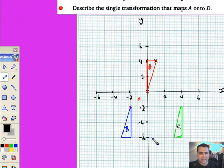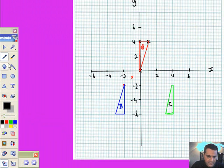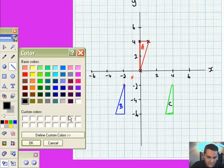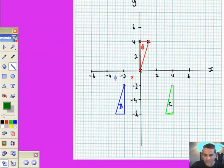I've gone from there to there with translation vector (6,0), and that's triangle C. Now I've got to reflect C in the line y equals minus 1. Let's put in the line y equals minus 1. I'll go for dark green. Y equals minus 1, it's this one right here.